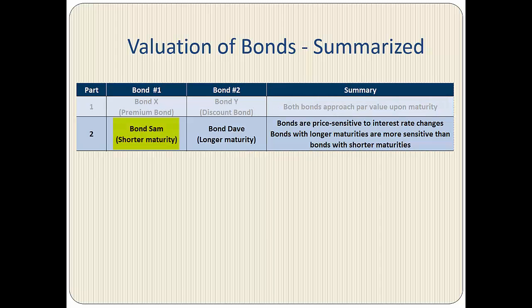In Part 2, we compared bond SEM that had shorter maturity to bond DAVE that had longer maturity, and concluded that bonds are price sensitive to interest rate changes in the economy, and that bonds with longer maturities are more price sensitive to interest rate changes than bonds with shorter maturity periods.